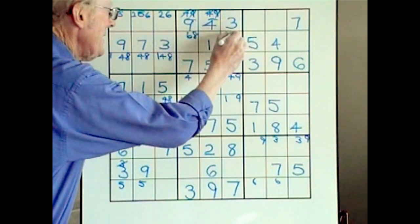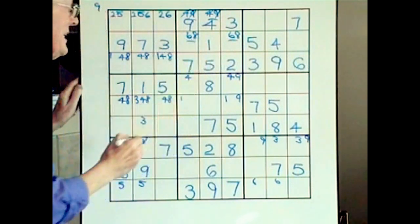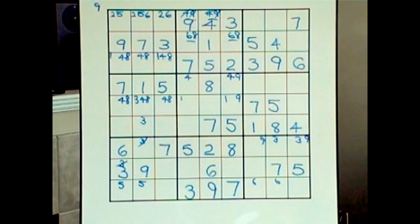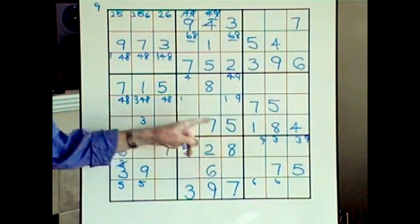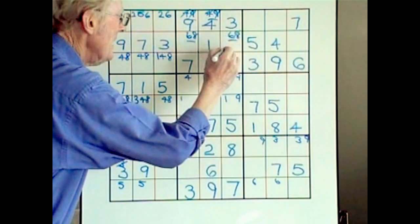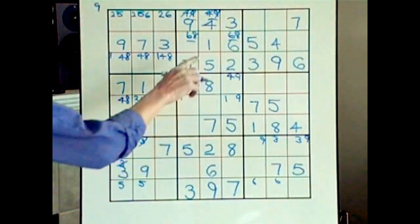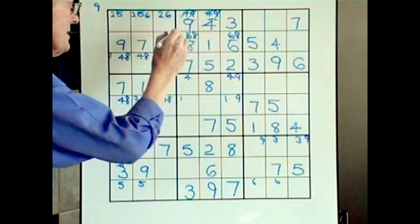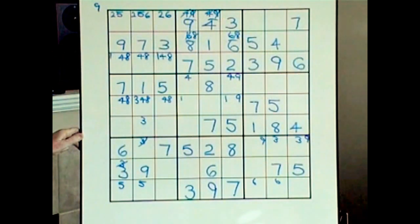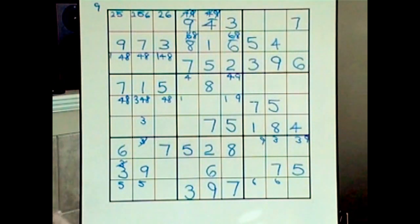Now with that matching pair, there are several things we can do. Here we have an eight, so we can cross out that eight and put a six. If that's a six, then we cross out this six and put an eight. So we now fill our whole block just because I recognized that the nine was going to be down there.